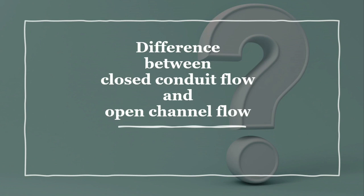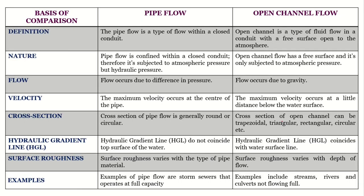We will see the differences between closed conduit flow and open channel flow. Pipe flow is that type of flow within a closed conduit or closed path, whereas an open channel is an open conduit — an open system with a free surface always open to the atmosphere. In pipe flow, we apply external pressure to make the fluid move, whereas in open channel flow you need not give any external pressure because the fluid always flows under gravity.